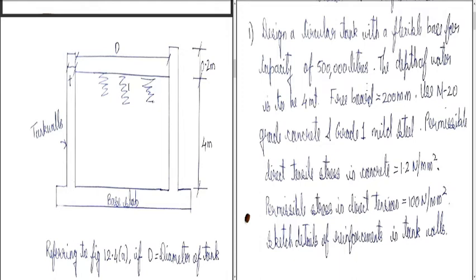From the given data, we need to design a circular tank holding 5 lakh liters with a water depth of 4 meters — so we only need to determine the diameter. Freeboard is 200 mm. The permissible direct tensile stress in concrete and permissible stress in direct tension are given; if not given in the question, we refer to IS 3370 Part 2 to obtain those values.